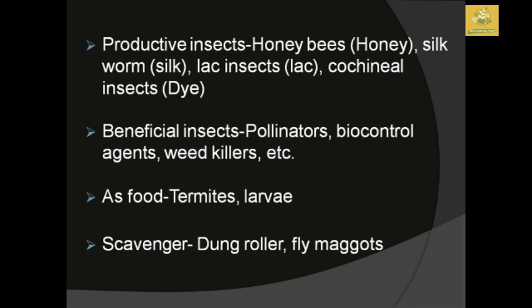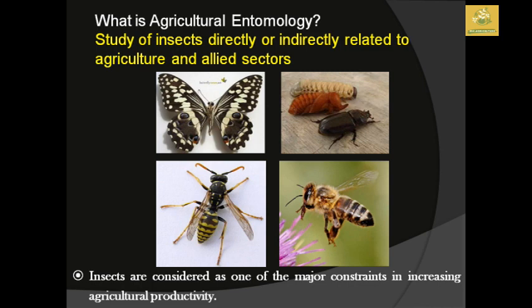Insects do not only have disadvantages; they also provide some beneficial services. Food-productive insects include the honeybee which gives us honey, the silkworm which gives silk, the lac insect, and the cochineal insect which is mainly grown for its dye. Beneficial insects can also be termed as pollinators, biological control agents, and weed killers in our fields. Insects also act as food for human beings in many places — termites and larvae are used as food — and as scavengers, such as dung beetles and fly maggots which clean the environment.